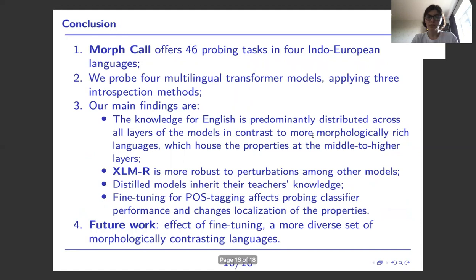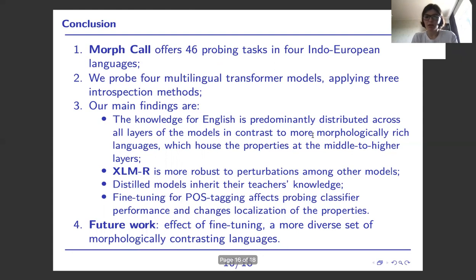To conclude, we have designed a new set of probing tasks, MorphCol, which can be used with multiple introspection techniques to probe pre-trained language models. Key findings: first, knowledge for English and morphologically rich languages is distributed differently across models. Second, different models exhibit different patterns — for example, XLM-RoBERTa is less prone to perturbations, while distilled models almost copy their teachers' behavior, suggesting they inherit knowledge from source models. Finally, fine-tuning for part-of-speech tagging affects probing classifier performance and changes the localization of properties. Our approach can be extended to other morphologically contrasting languages as future work. Thank you all for your attention, and we are happy to answer questions.